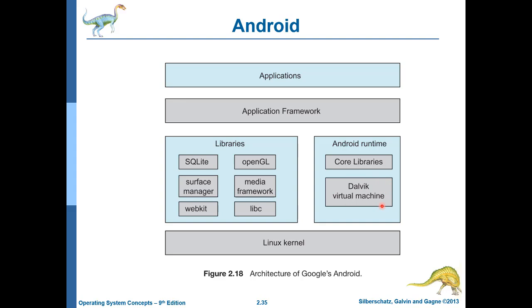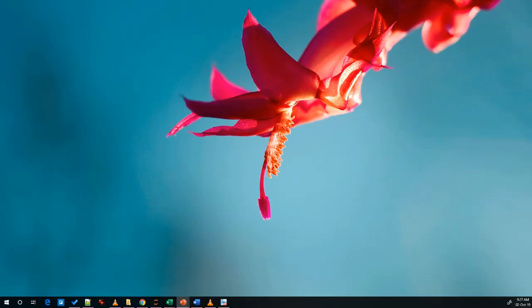The Android runtime uses a form of Java Virtual Machine because Android applications were originally written in Java. Now they are transitioning to Kotlin as the primary programming language for Android development.